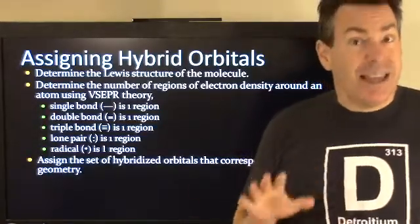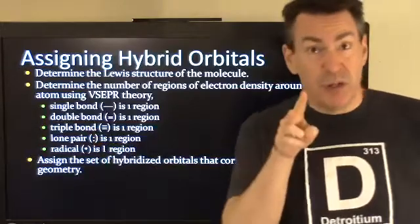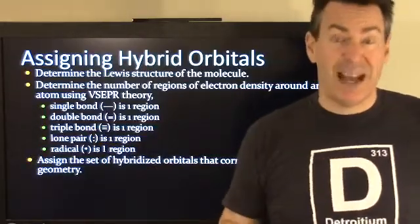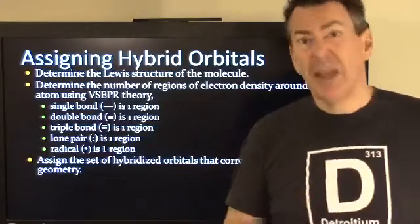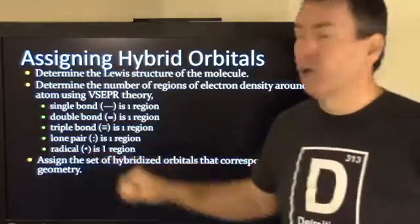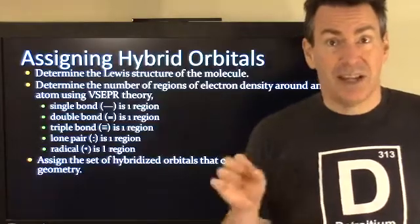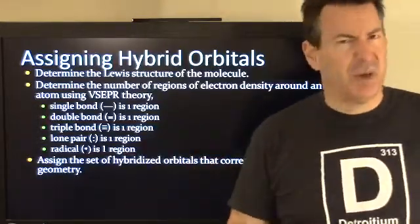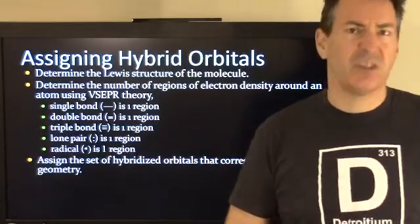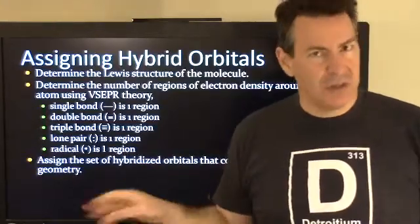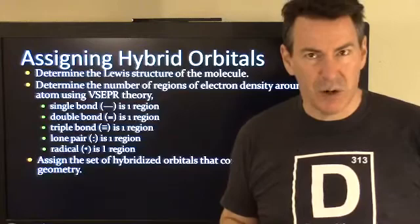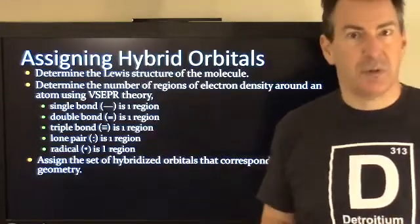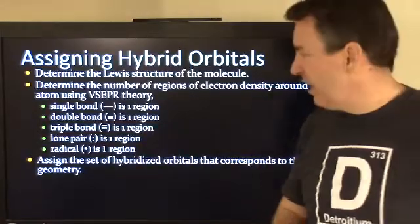The other common area is a lone pair of electrons. When you see those two dots on an atom, that also counts as one area — it takes up space around that atom. And then there's the less common radical: if you just see a single dot by itself next to an atom, that's called a radical and counts as one region as well. You won't see that as much in this course, but in organic chemistry you'll encounter more radical systems, and it factors into hybridization.